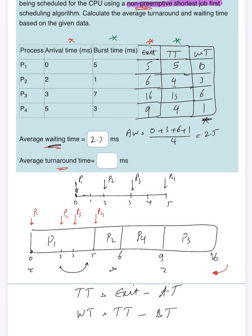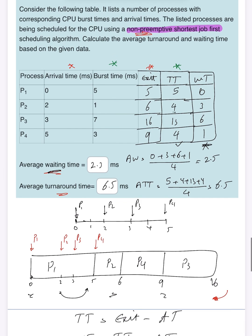Next one, turnaround time. I need to find the average of this column. So average turnaround time, which is 5 plus 4 plus 13 plus 4 divided by 4, which equals 6.5 milliseconds.